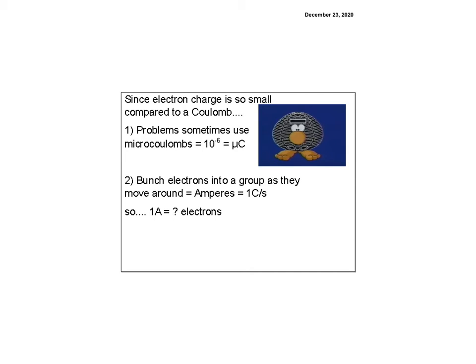So a lot of times, our problems use micro coulombs, which is 10 to the negative 6. So micro coulombs is like our mu, equals micro coulombs. That's our Greek mu, which is option M on your keyboard. It's something I've learned this year.